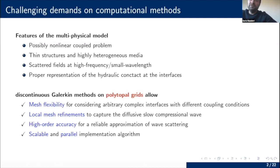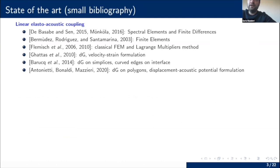Furthermore, we can achieve high-order accuracy, which is very important for wave propagation problems in order to capture the wave scattering. And finally, through the DG method, the implementation in parallel architectures is very easy. Here I report a small bibliography concerning this multi-physical problem, divided into different categories such as linear elastoacoustic coupling with different approaches and discretization techniques.